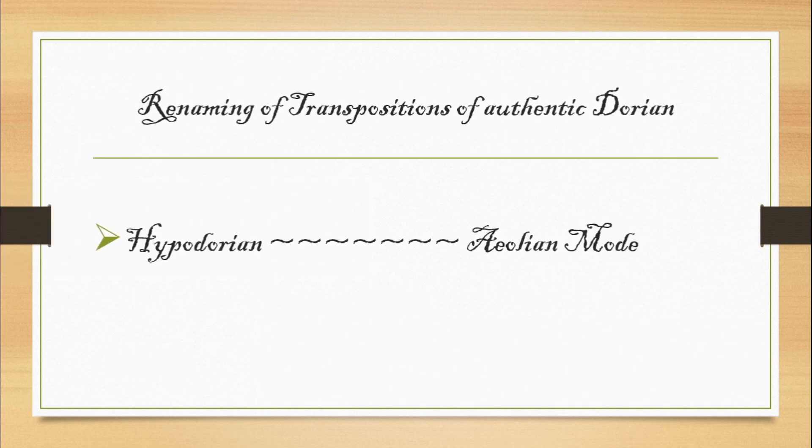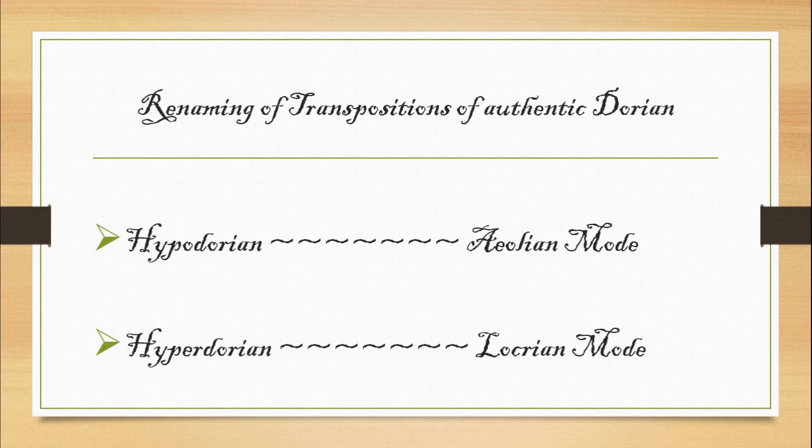Hyperdorian was relabeled as Aeolian and Hyperdorian, the Overdorian, like we have hyper and hypertonic, hyperactive and so on. And because it was derived from Dorian by transposition by an ascending fifth, was then relabeled the Lydian mode.